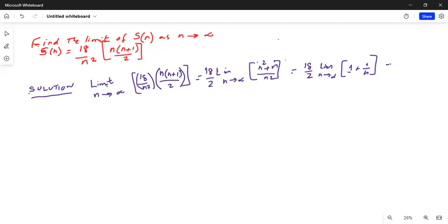This can be written as N tends to infinity, 1 over N tends to 0. So I'm left with 18 divided by 2 multiplied by 1. So the final answer that I am looking for is 9.